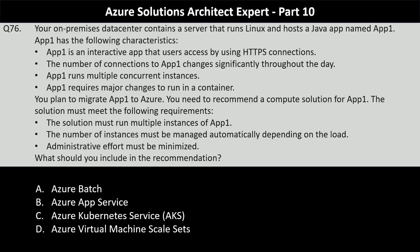Your options are Azure Batch, Azure App Service, Azure Kubernetes Service, or Azure Virtual Machine Scale Sets. App1 requires major changes to run in a container and you need to minimize administrative effort, so you can safely rule out AKS. Azure Batch does not support HTTPS-based user-interactive applications directly, so that is ruled out too. App Service and VMSS can both fulfill the requirement, but to minimize administrative effort we rule out Virtual Machine Scale Sets.